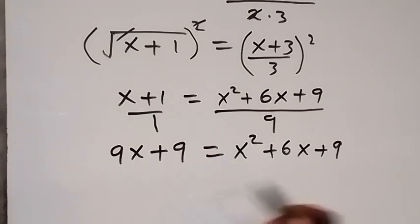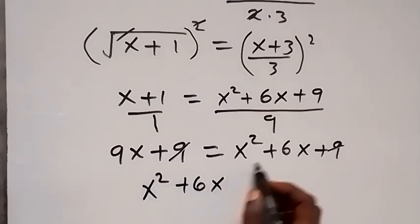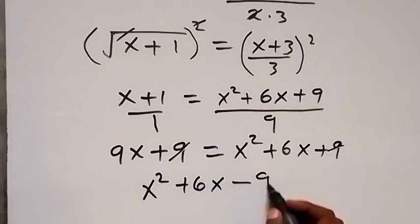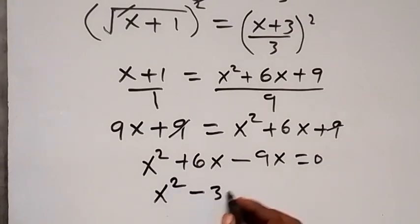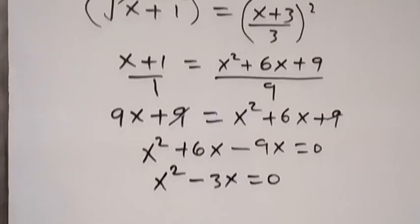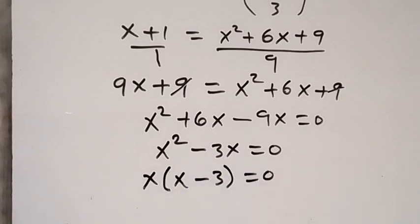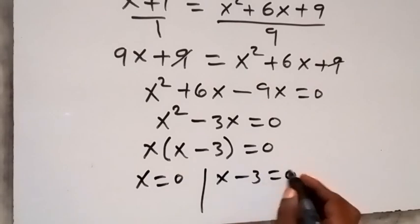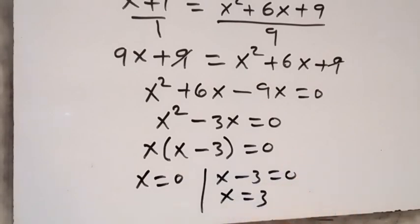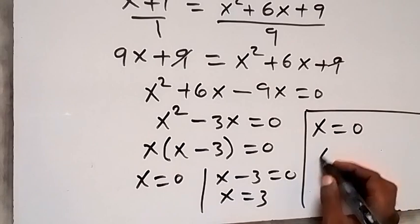We can collect like terms. The 9 cancels on both sides. Taking 9x to the right gives x squared plus 6x minus 9x equals 0, so x squared minus 3x equals 0. Factoring out x: x(x minus 3) equals 0. Therefore x equals 0 or x minus 3 equals 0, giving x equals 3.